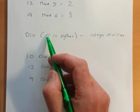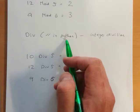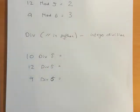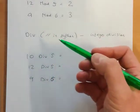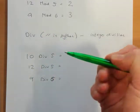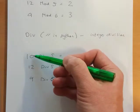And again that's double forward slash in Python, but in the exam it would be written as div. This time we want to know how many times does the number go in, and how many times does it fit exactly.